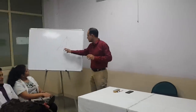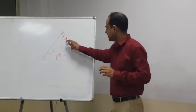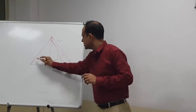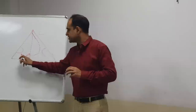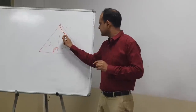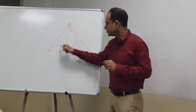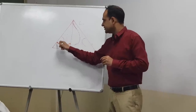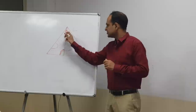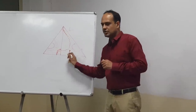Nasal mucosa was minimally congested. Right side inferior turbinate hypertrophy was noted. When DNS is to the left, there is more room on the right side, causing the right turbinate to undergo paradoxical hypertrophy due to increased airflow. This is called paradoxical hypertrophy of the turbinate, and a C-shaped DNS can therefore also cause bilateral nasal obstruction.